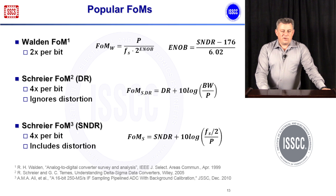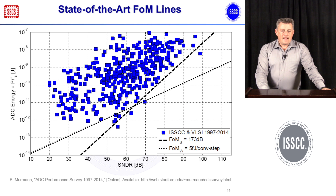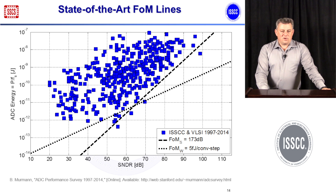To show what typical numbers look like and how these figures of merit approximate the leading edge, I return to the energy plot. The dashed line is the Schreier figure of merit evaluated at 173 dB, which is the borderline of the state-of-the-art for high resolution. For low resolution below 50 dB, the Walden figure of merit remains more appropriate, with a 2× per 6 dB trade-off and a limit line at 5 femtojoules per conversion step.